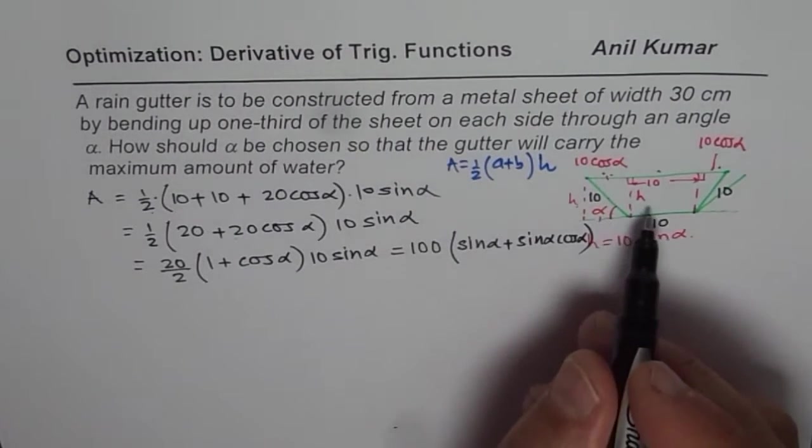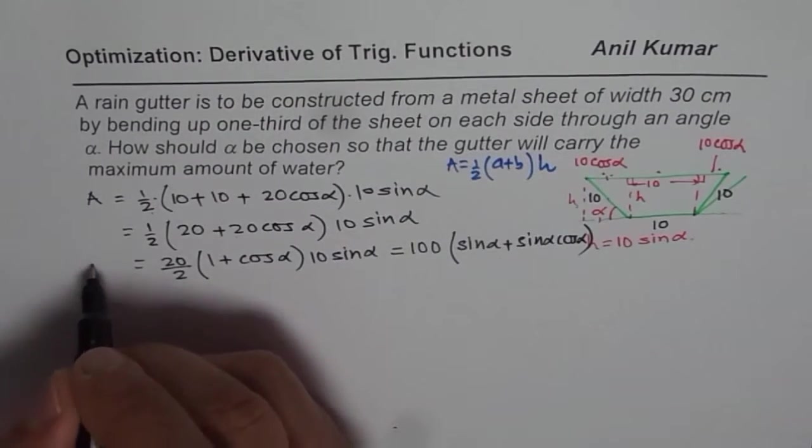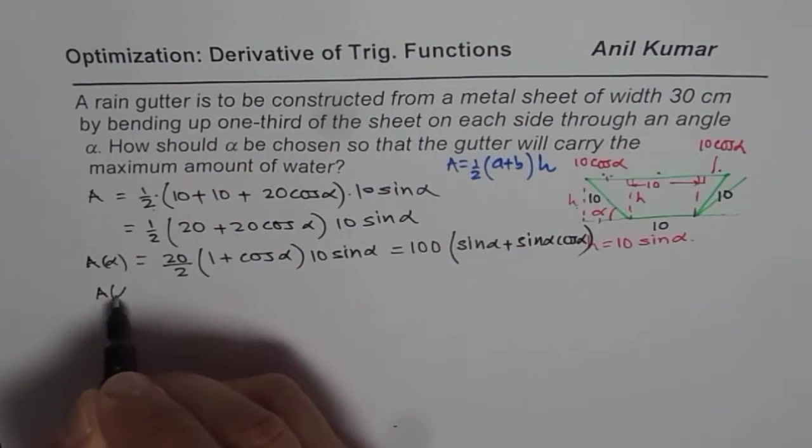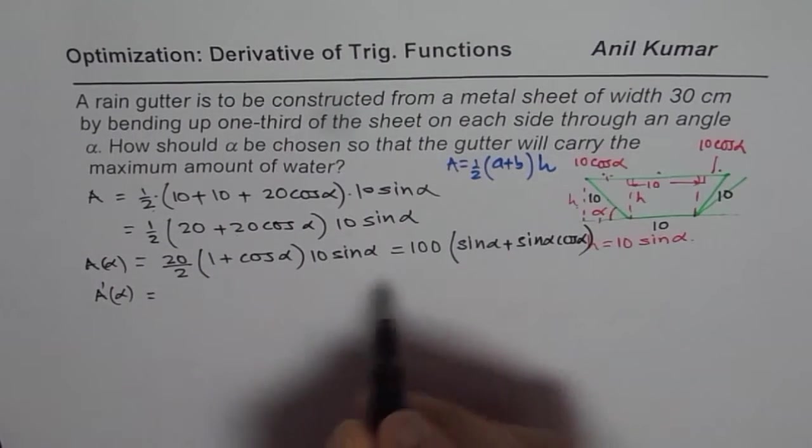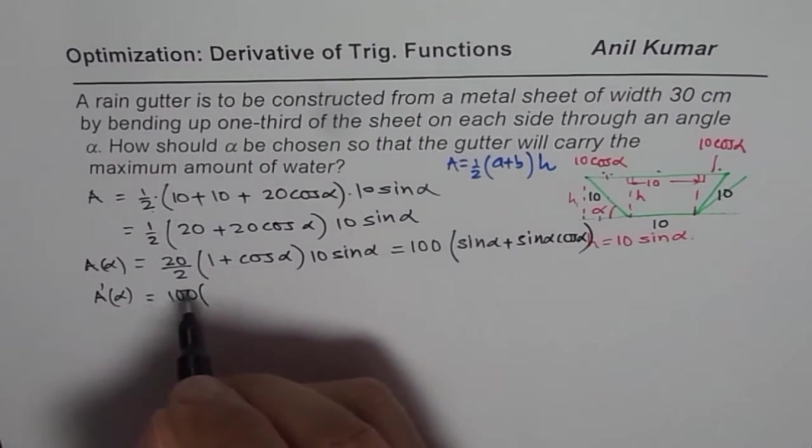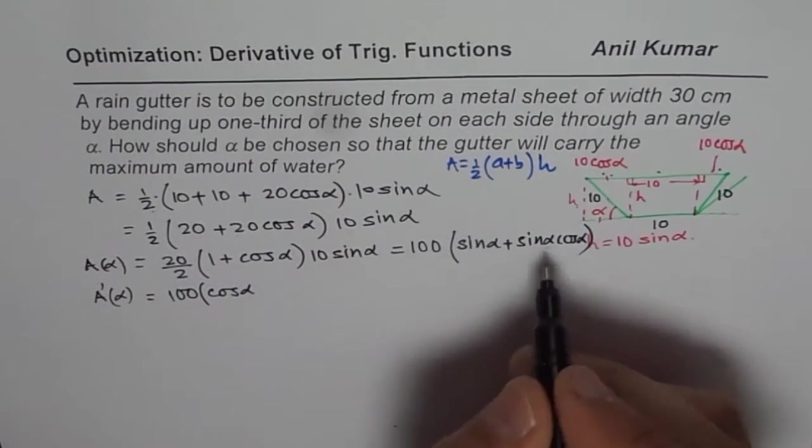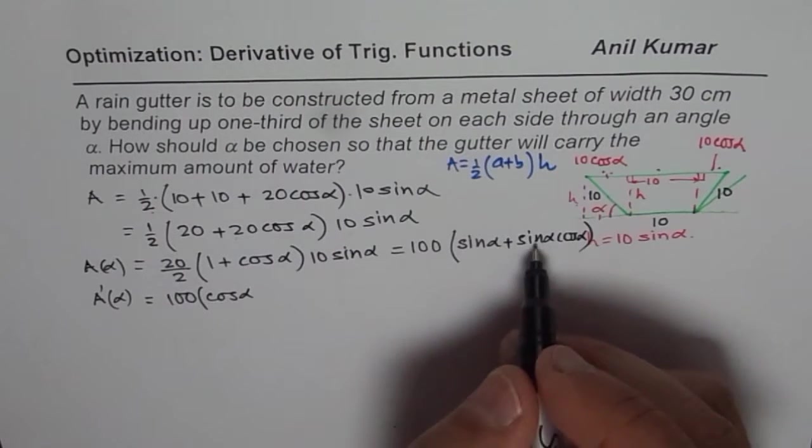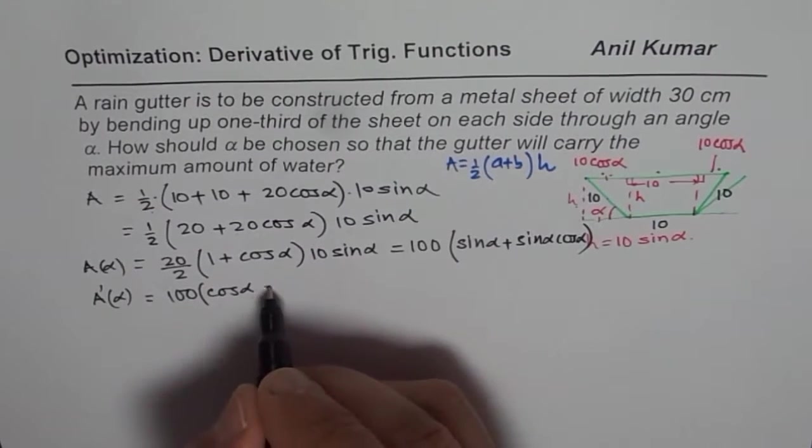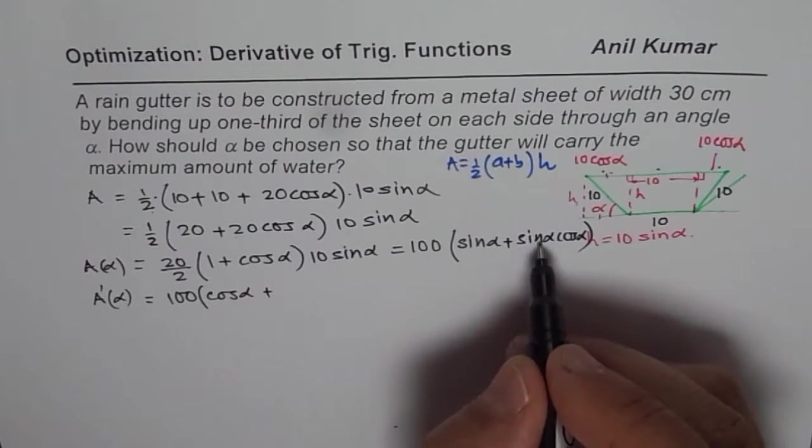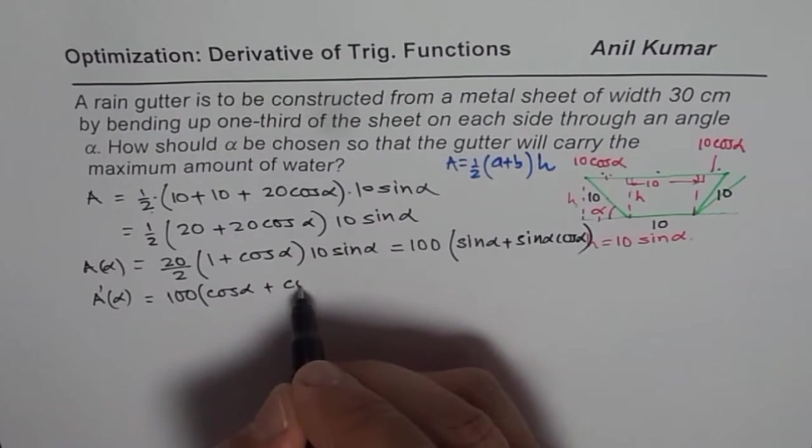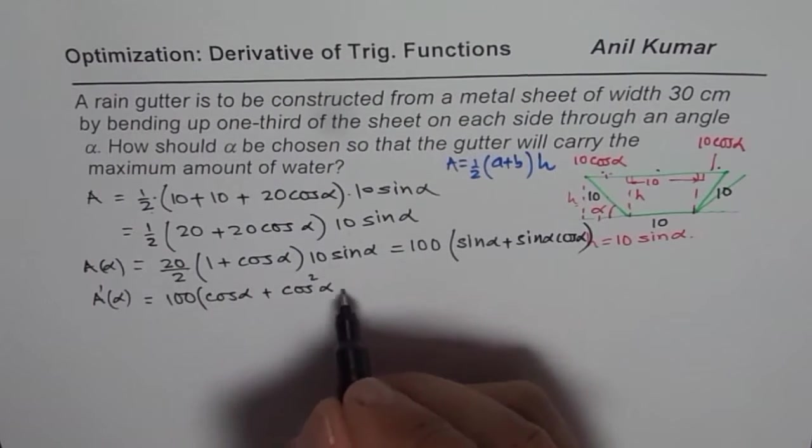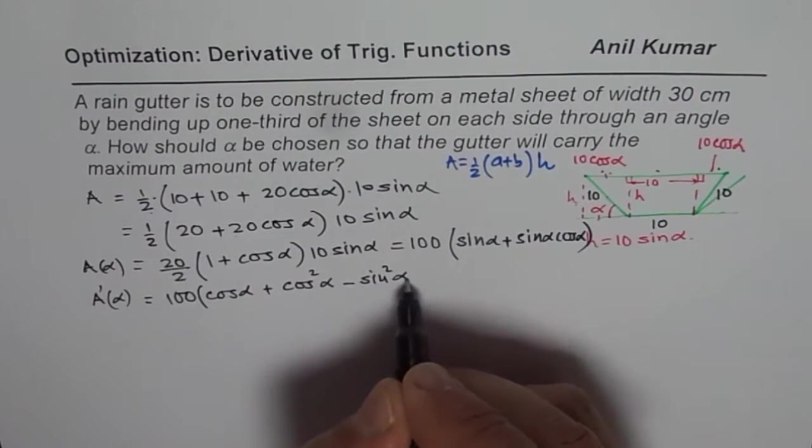To maximize the area, we can find the derivative. This is an expression of area in terms of angle alpha. Let's find derivative with respect to angle alpha. So we have 100 times: sin alpha derivative is cos alpha, plus sin alpha cos alpha we do the product rule. So cos alpha times cos alpha gives cos square alpha, and derivative of cos alpha is minus sin alpha, so that gives minus sin square alpha.